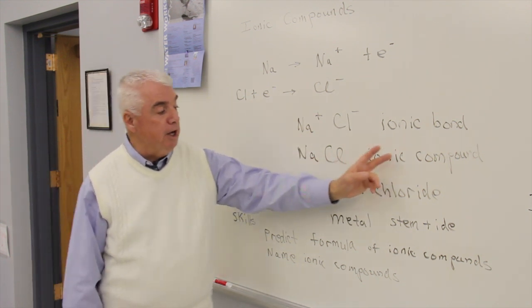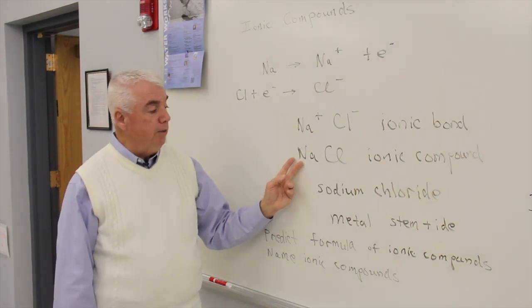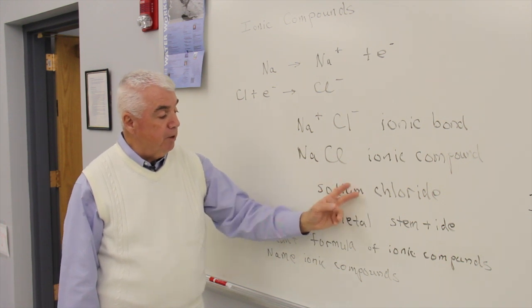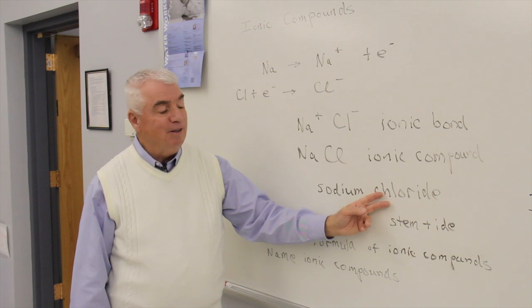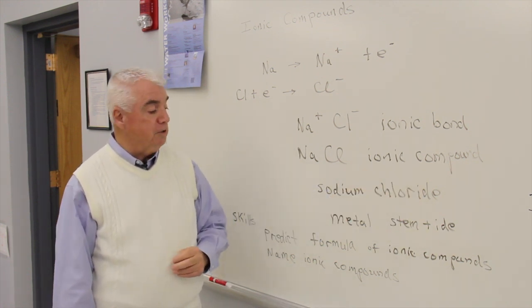When we name an ionic compound, the metal is written on the left, the nonmetal on the right, and it's simply the name of the metal, the stem of the nonmetal, plus IDE. Chlor coming from chlorine in this case.